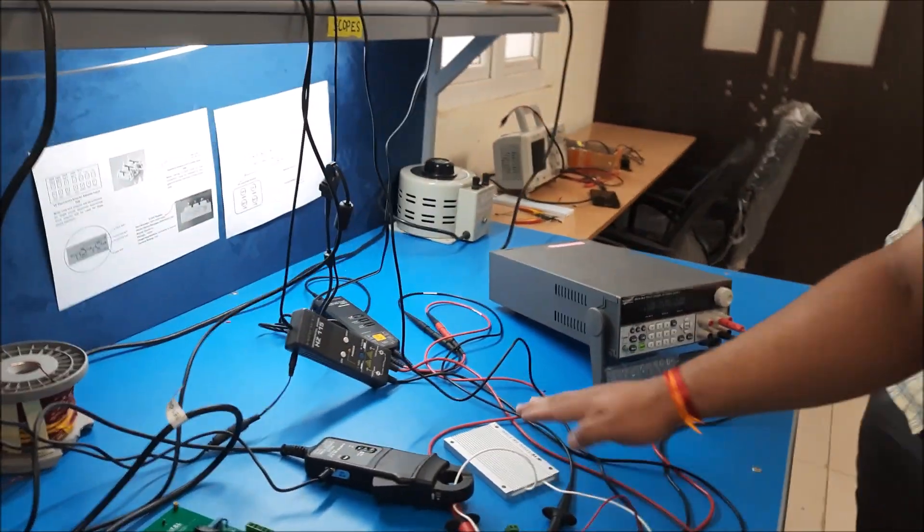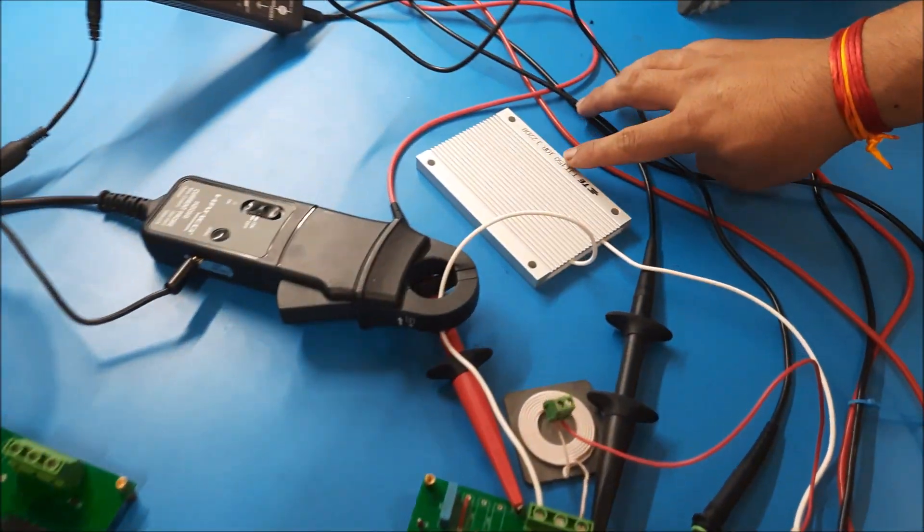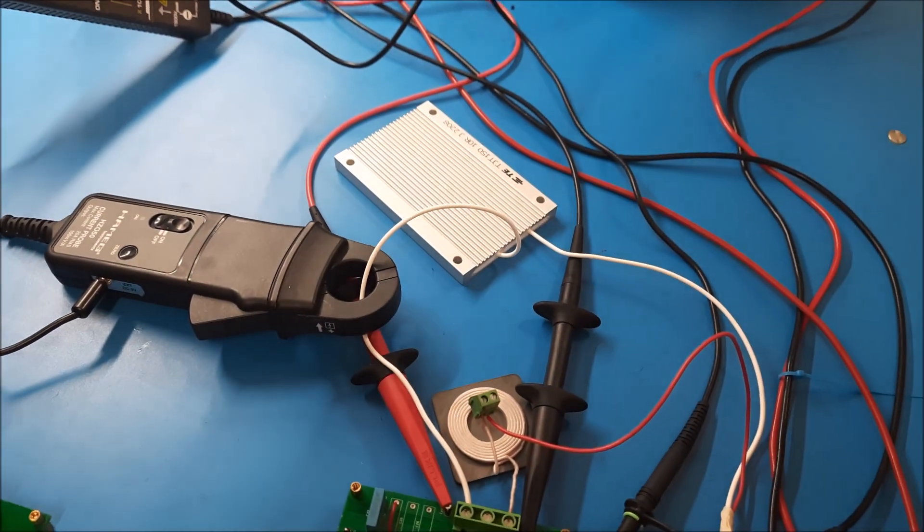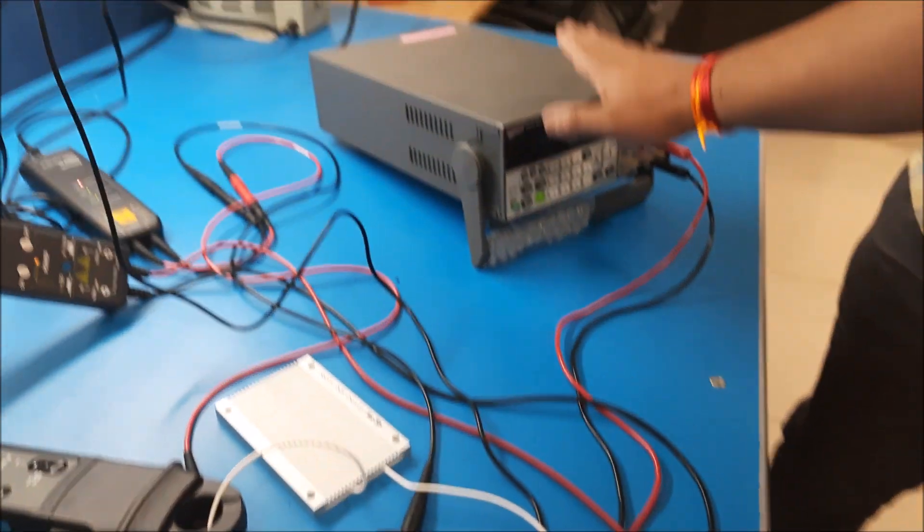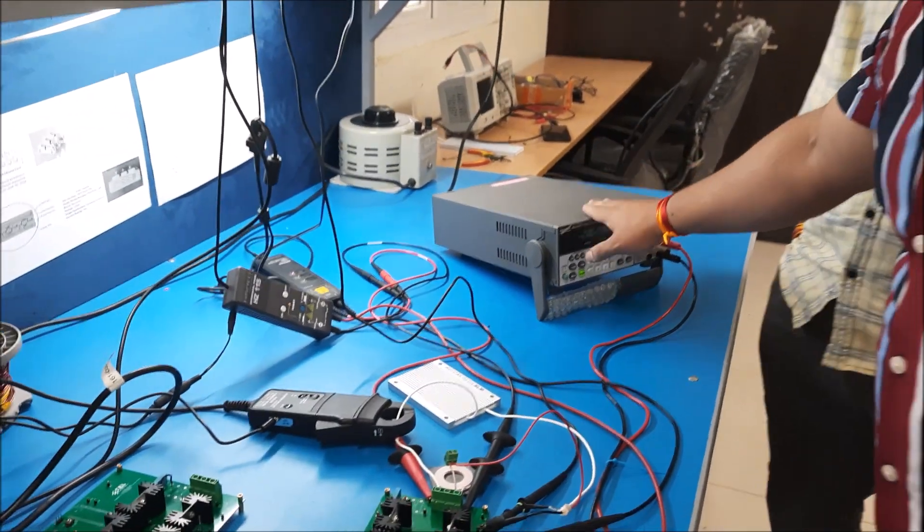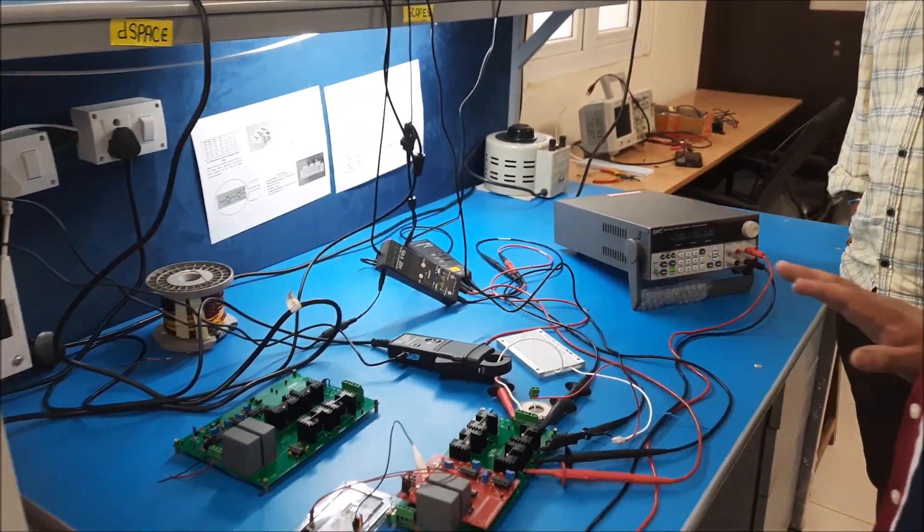So you can see here, I am using an RL load. This R is 10 Ohm and L load is about 10 micro Henry. So according to our power supply, because our power supply only gives around 3 ampere of current, I have adjusted the load accordingly.